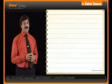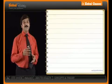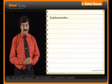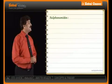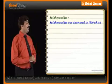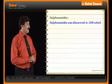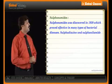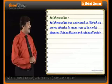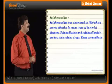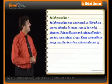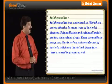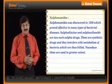Let us see more details on sulphur drugs, specifically Sulphonamide. Sulphonamide was discovered in 1930 and proved effective in many types of bacterial disease. Sulphadiazine and Sulphonamide are two such sulphur drugs. These are synthetic drugs that interfere with the metabolism of bacteria, which are thus killed. Nowadays these are not used to a greater extent as many other drugs have come to market.